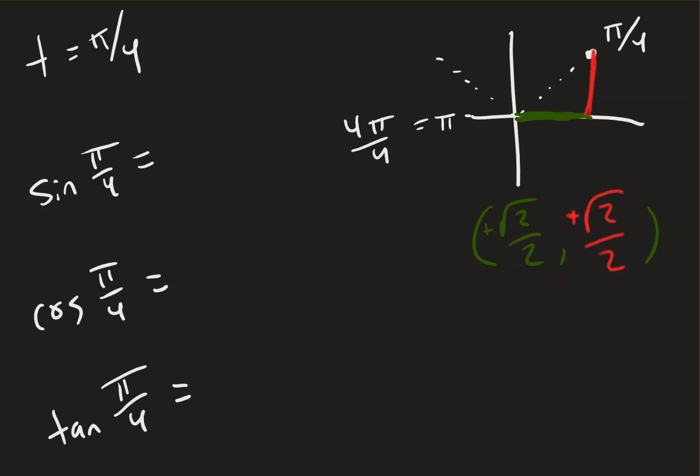So, the reason why we go ahead and memorize that information is because now the x value at that point on the unit circle gives me the cosine, so positive square root of 2 over 2, the y value at that location gives me the sine of that angle, which is also positive square root of 2 over 2.